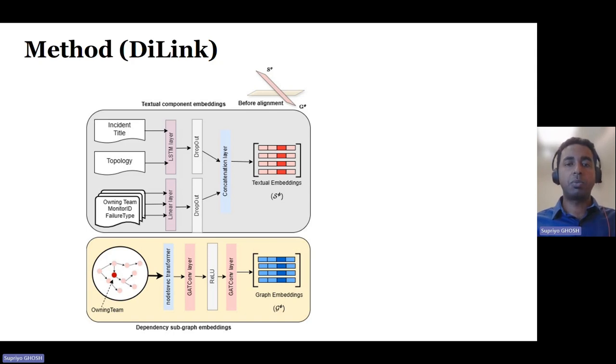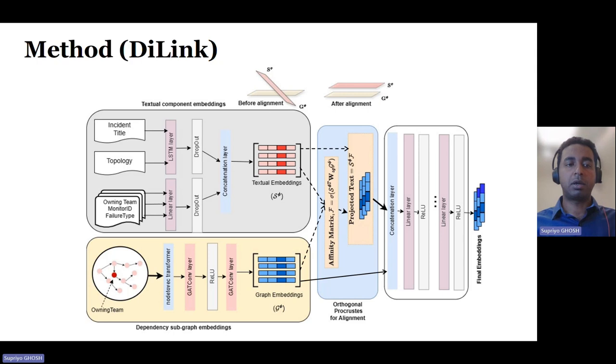However, due to misalignment of text and graph embeddings, a simple concatenation performs poorly. We propose a novel method of aligning textual embeddings into the graph embedding space using orthogonal procrustes method. Finally, the concatenation of projected text and graph embeddings are used to compute the incident similarity scores.